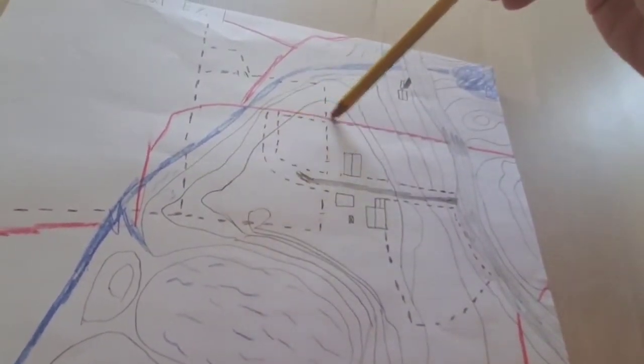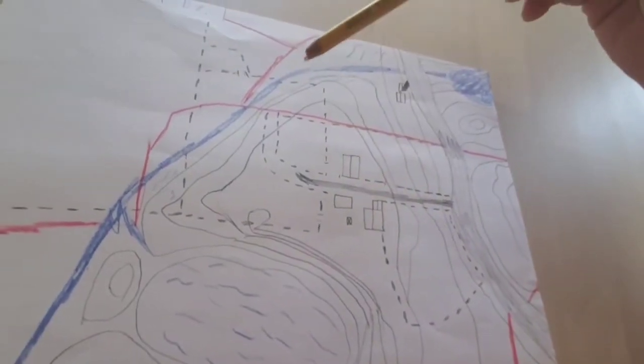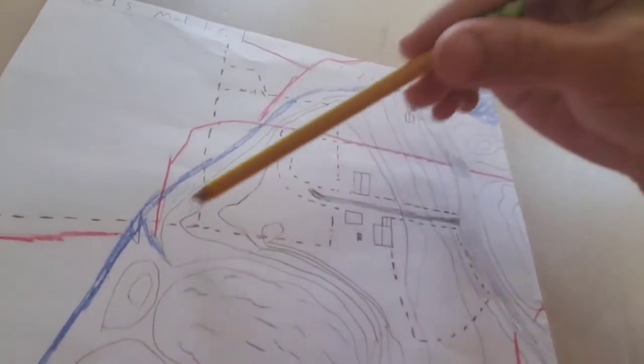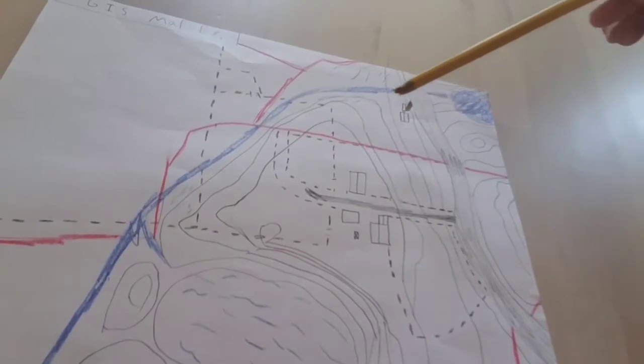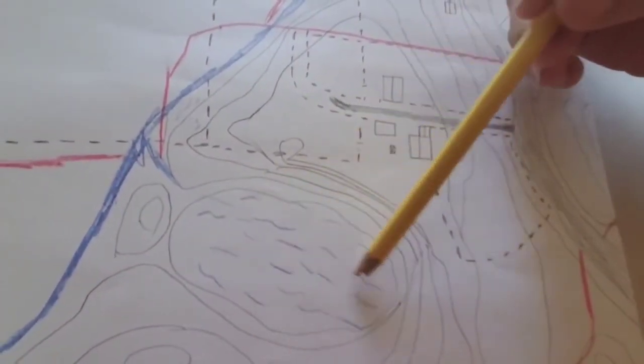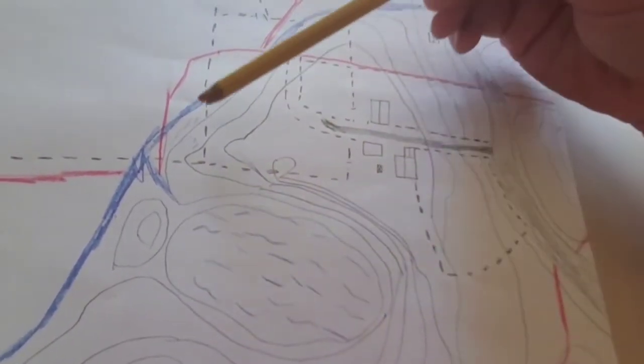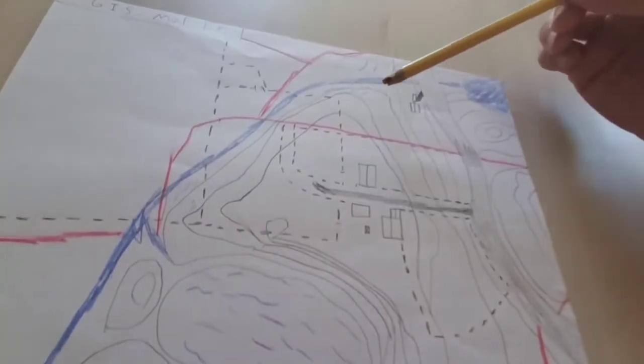These swirly lines right here, these are your contours of the map. This right here is water, like a stream, and this is like a little pond up in here. Down here, the little blue dots and squiggles right here, this is all swamplands. Up here, and then this is just another house maybe.